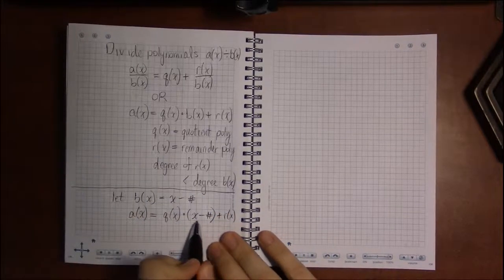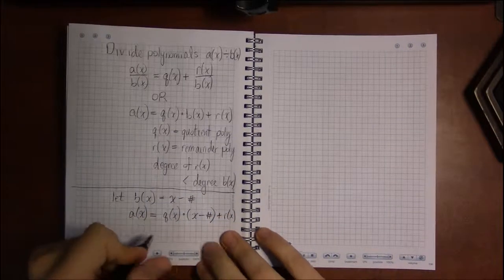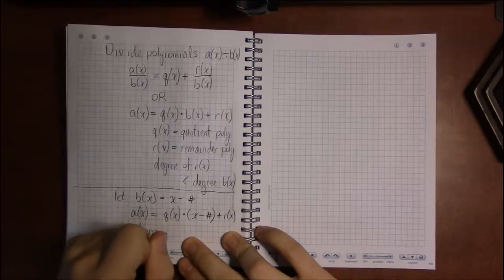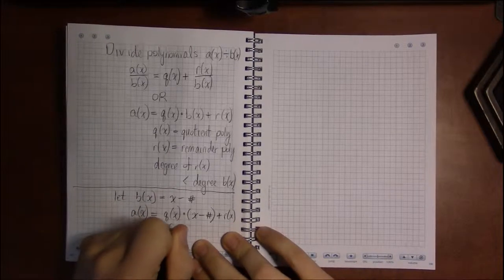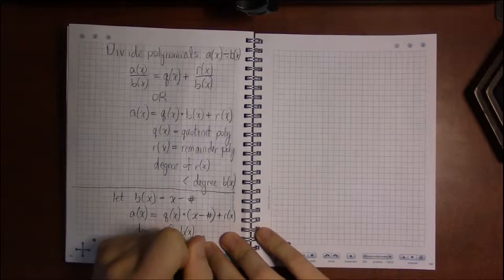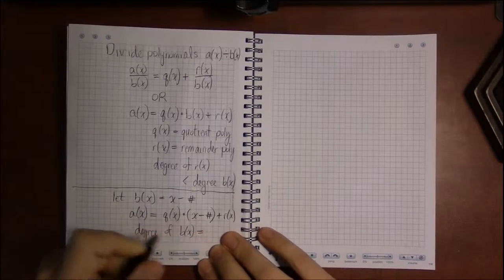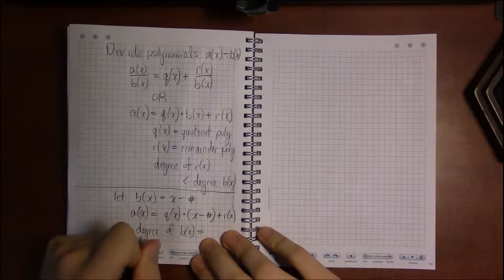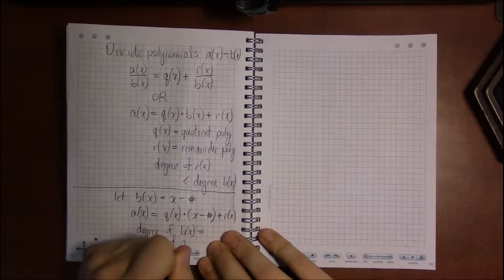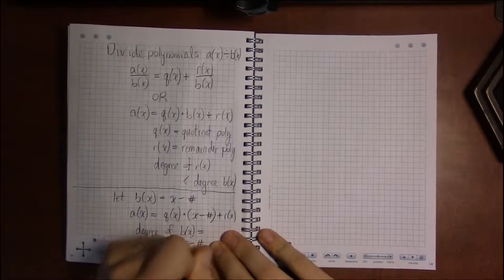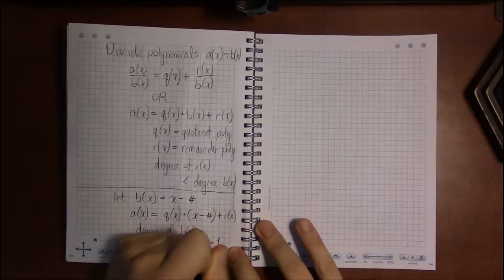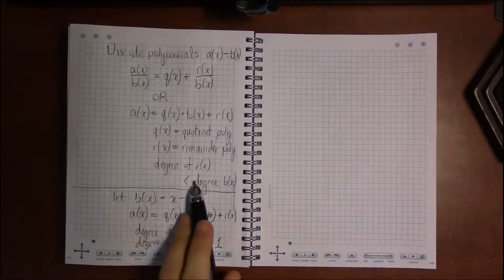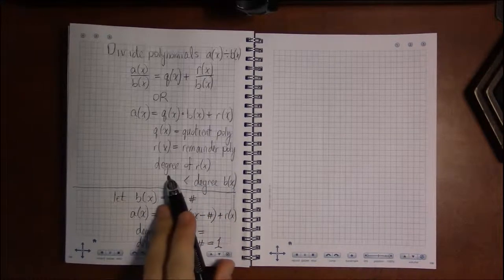But the degree of B, the degree of X minus some number, is just 1. So the degree of X minus any number is simply 1.